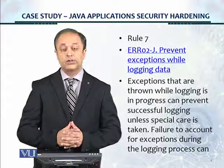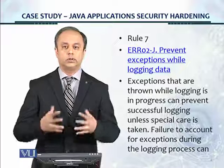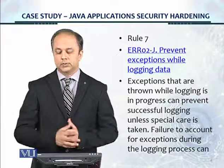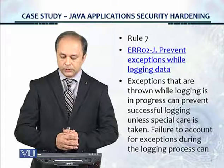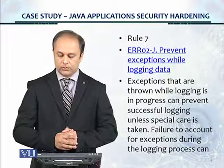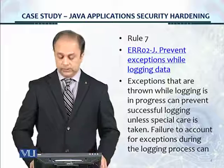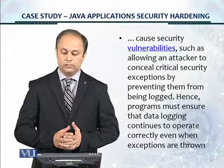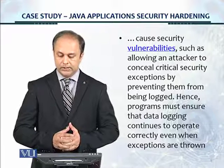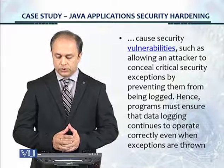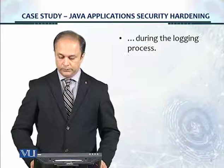Let's take a look at Rule 7. The particular control we're going to look at as an example in this module is 'prevent exceptions while logging data.' Exceptions that are thrown while logging is in progress can prevent successful logging unless special care is taken. Failure to account for exceptions during logging can cause security vulnerabilities, such as allowing an attacker to conceal critical security exceptions by preventing them from being logged. Programs must ensure that data logging continues to operate correctly even when exceptions are thrown during the logging process.